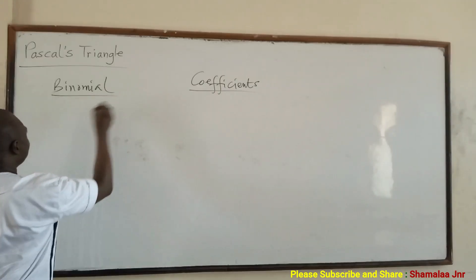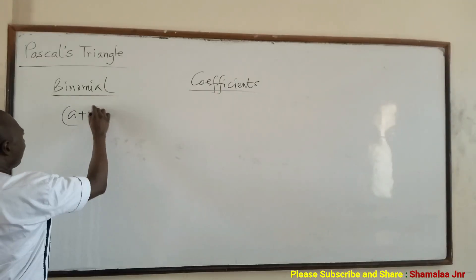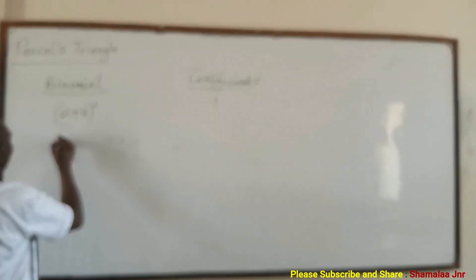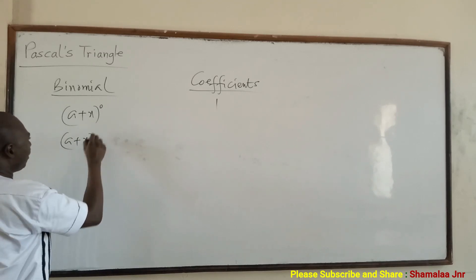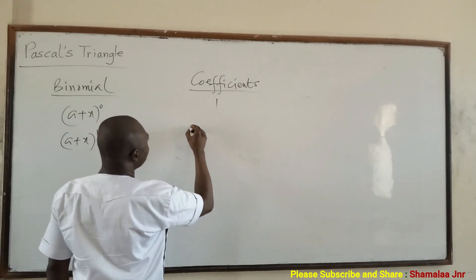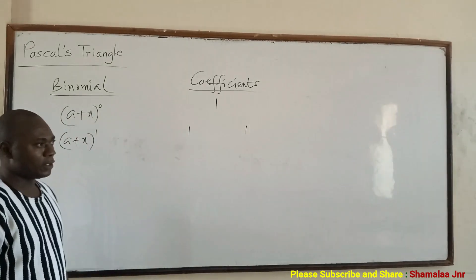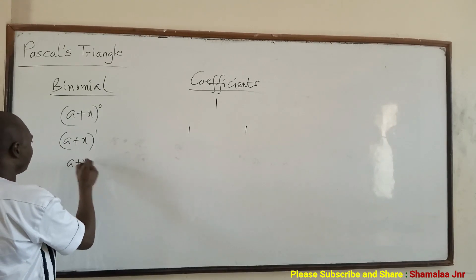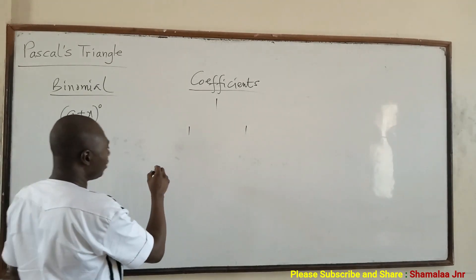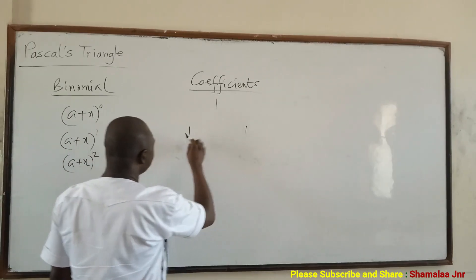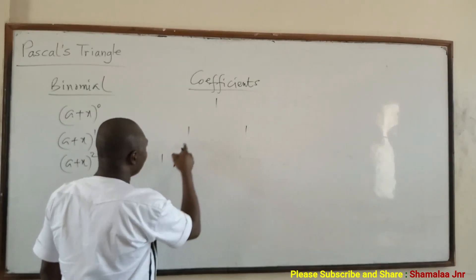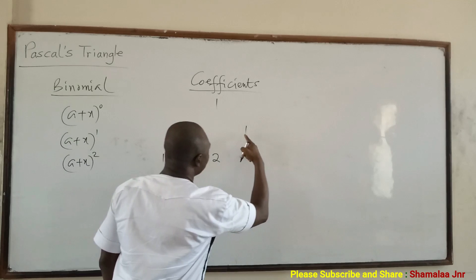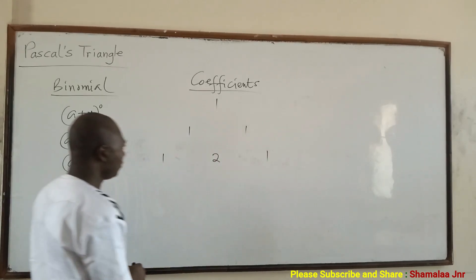When you have something like (a + x) raised to the power 0, the coefficient would be 1. When you have (a + x) raised to the power 1, then you have 1, 1. Pascal says you write this 1, then add these two: 1 plus 1 is 2 — write it in the middle — and then write this 1. It's a triangle.